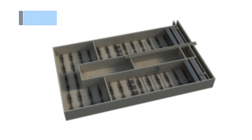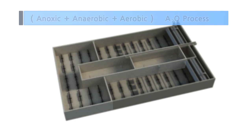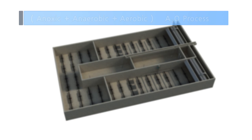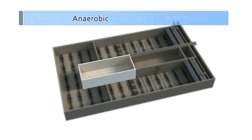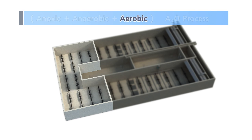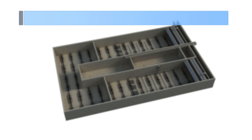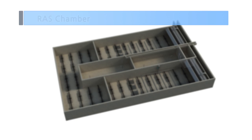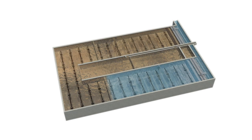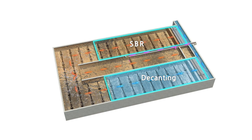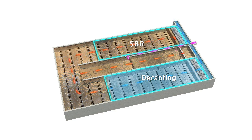This system is composed of an A2O process with three cells: anoxic, anaerobic, and aerobic, with continuous flow, together with two symmetrically arranged SBR cells. There is an ARS chamber located between the two SBR cells for the return of activated sludge. While one of the SBR cells functions as a settling cell to discharge treated water, the other SBR cell plays the role of a reactor by supplying air.